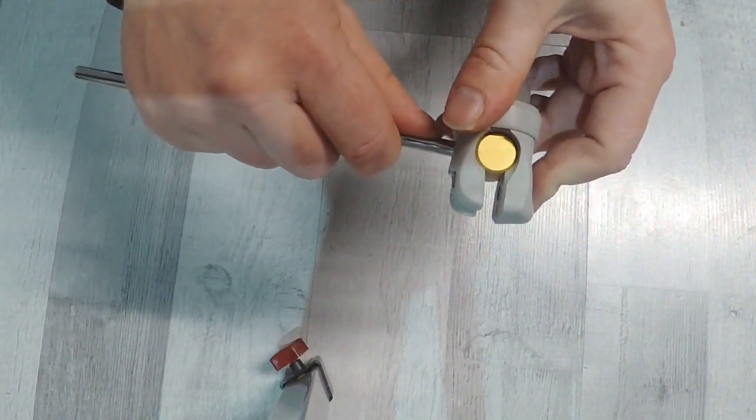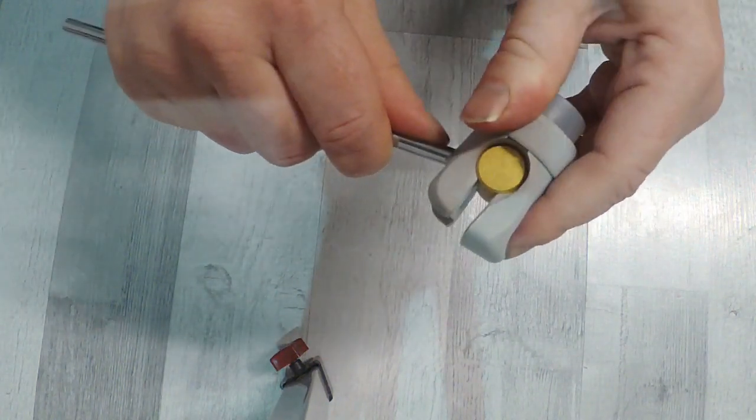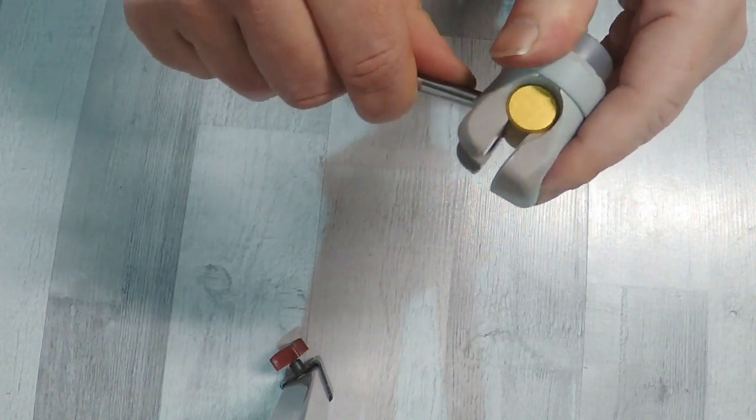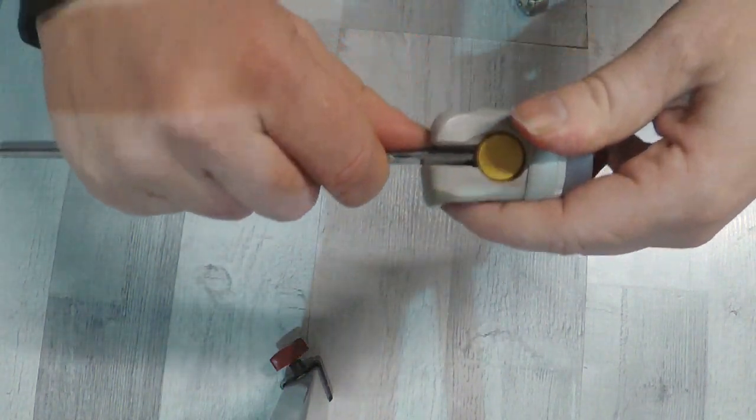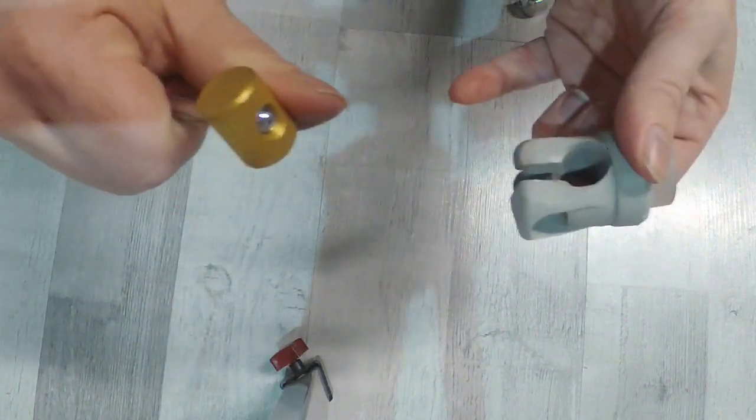Step number three, you are now able to turn the head of the beater. Turn it to 90 degrees and then remove the head of the beater.